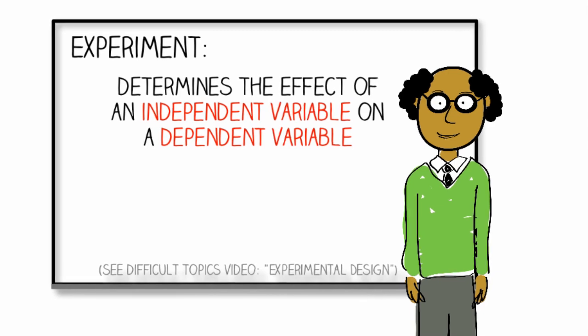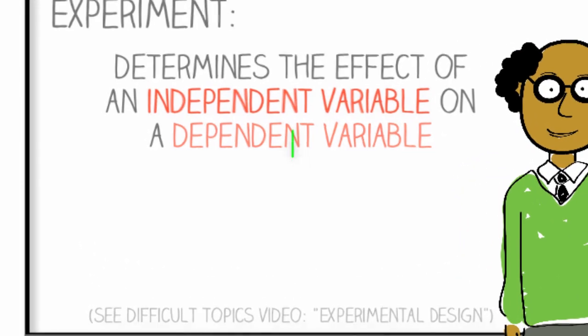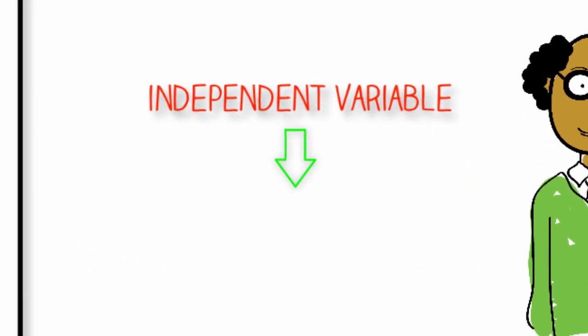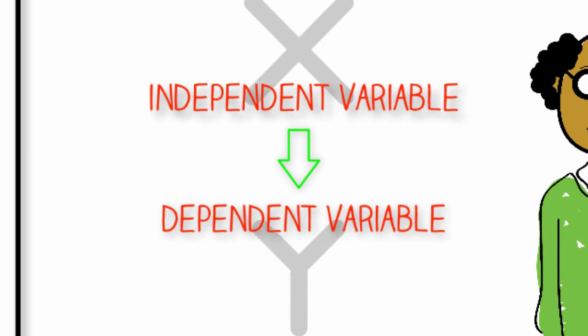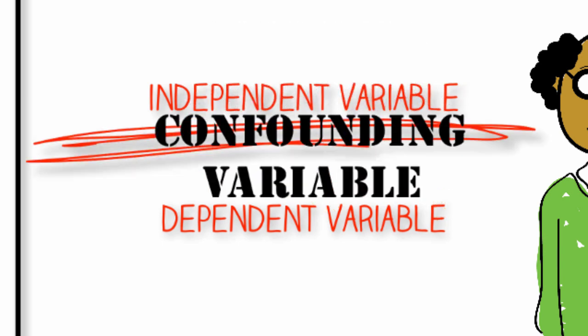Now, in a perfect experiment, only the independent variable would have any effect on the dependent variable. But life and experiments are rarely perfect. Extraneous variables are often present in an experiment and may or may not compromise the validity of the experiment. An extraneous variable that affects the validity of an experiment is referred to as a confounding variable.